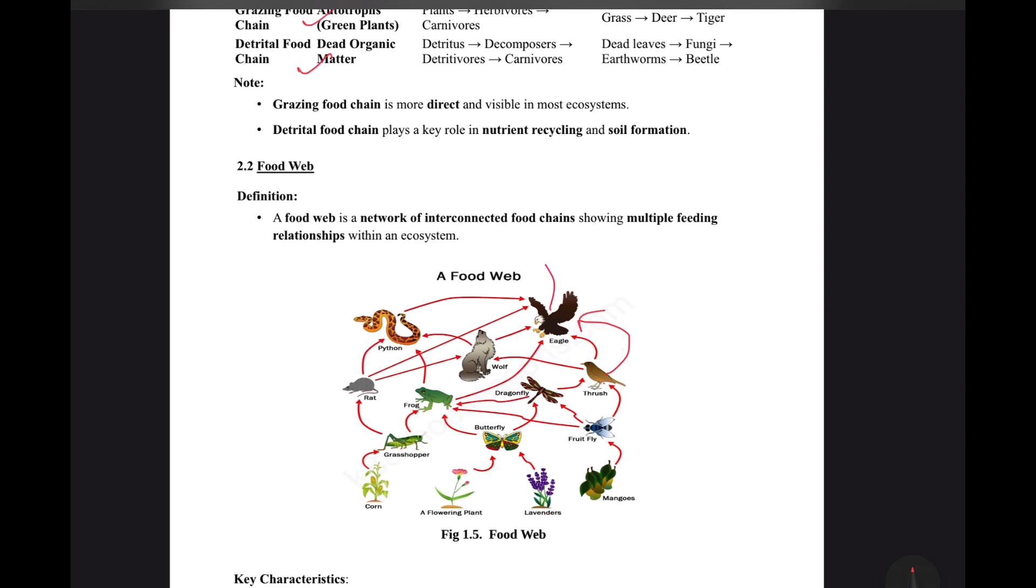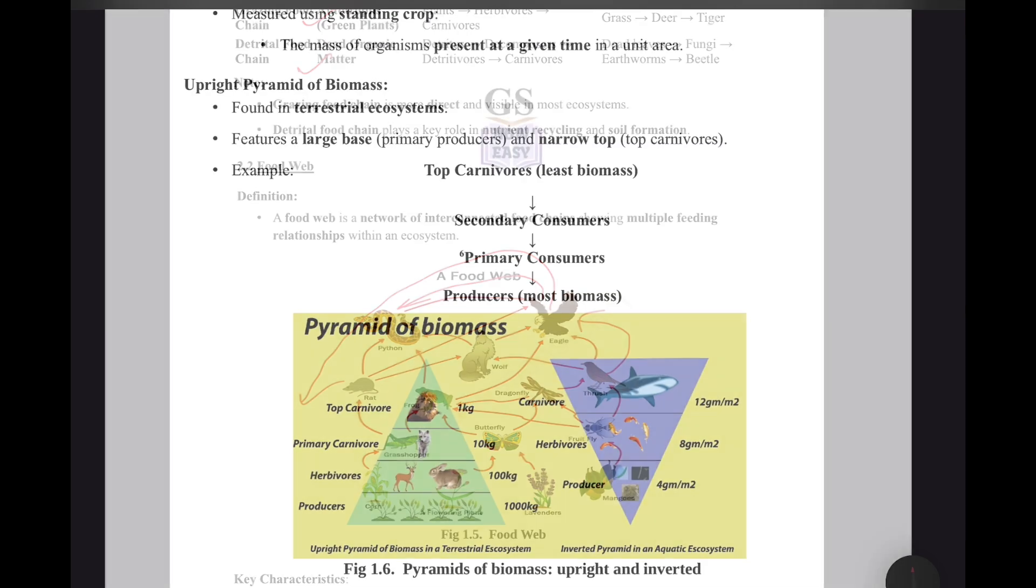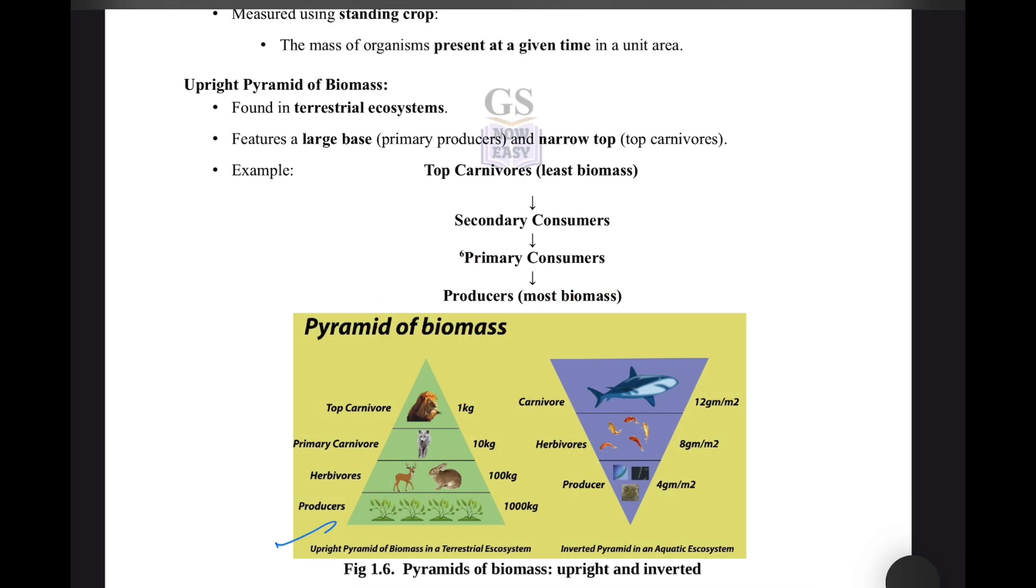Eagle also consumes rat directly or python, so it will be a complex set like a web. The food web is complex. There is one upright pyramid of biomass in a terrestrial ecosystem and you have 10% energy transfer rule at every step. As you go higher up, only 10% of the energy remains.